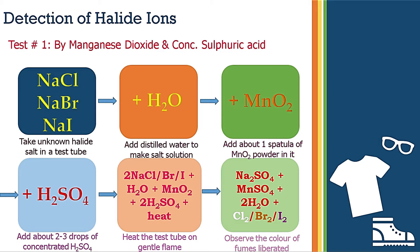The products formed are sodium sulfate, manganese sulfate, water, and halogen gas. You can recognize the halogen from the color of the gas fumes. Chlorine produces a colorless gas with a pungent smell. If brown colored gas is released, the salt contains bromide ion. If violet or purple colored gas is released, the salt contains iodide ion.